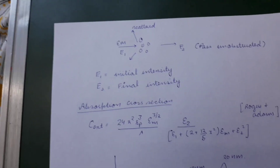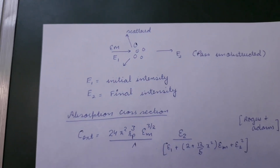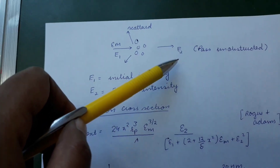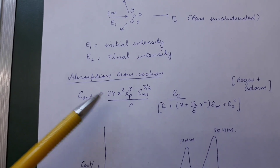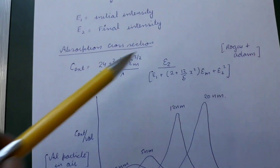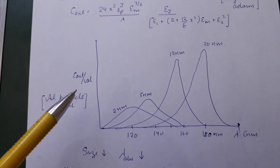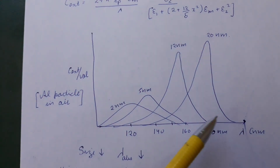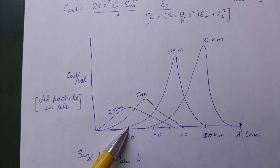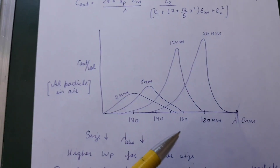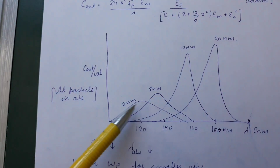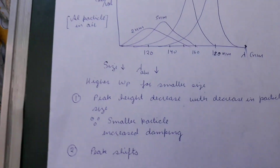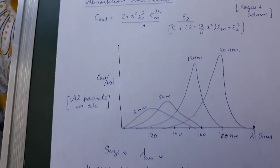In summary, as the size of the material decreases it absorbs at a smaller wavelength, and if larger it absorbs at a larger wavelength. In this schematic, incident photon intensity I is split: some is scattered, some absorbed, and transmitted intensity is I₂. The absorption cross-section depends on all these terms — you need not memorize the equation, just the concept. Plotting absorption per unit volume versus wavelength confirms: larger particles absorb at longer wavelengths, smaller particles at shorter wavelengths. Peak intensity also decreases — a 2 nm particle is more damped than a larger one.